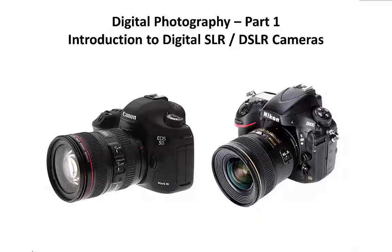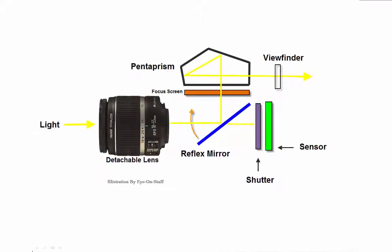So how does a digital SLR work? First, light travels through the detachable lens and hits the reflex mirror, which reflects the light up into the pentaprism. The pentaprism deviates the light 90 degrees out to the viewfinder, so the photographer has a through-the-lens view of the subject. Notice the reflex mirror is in the down position during this process.